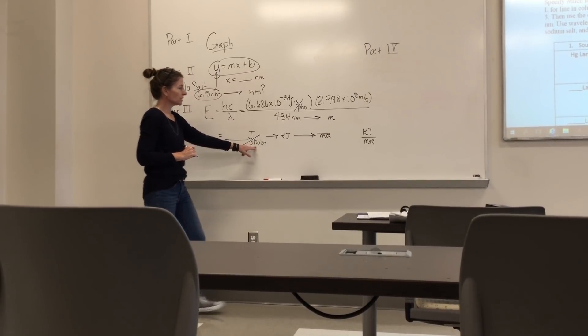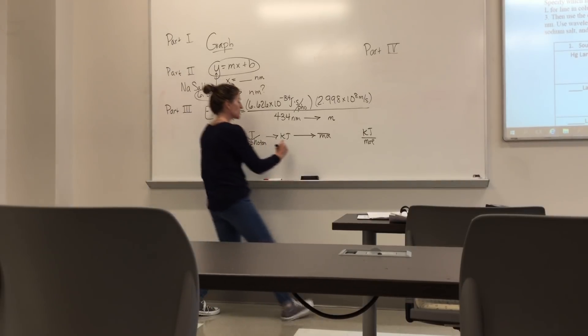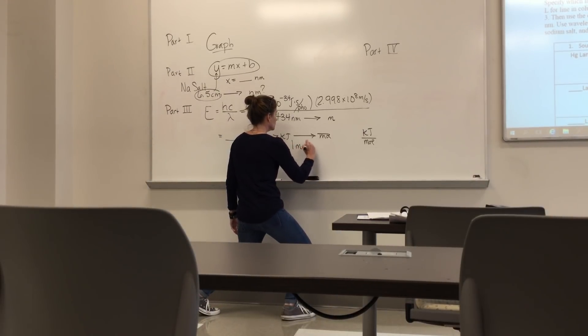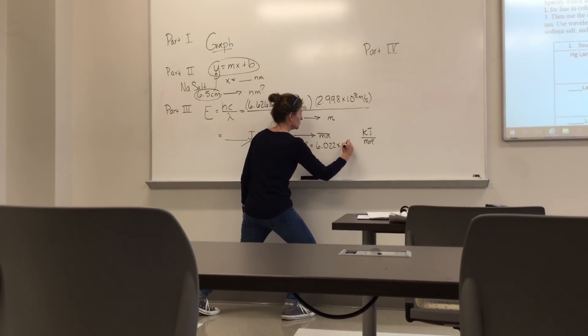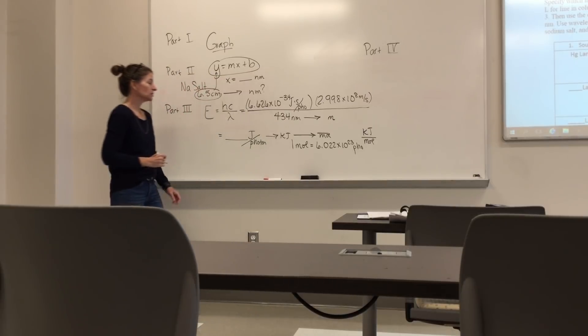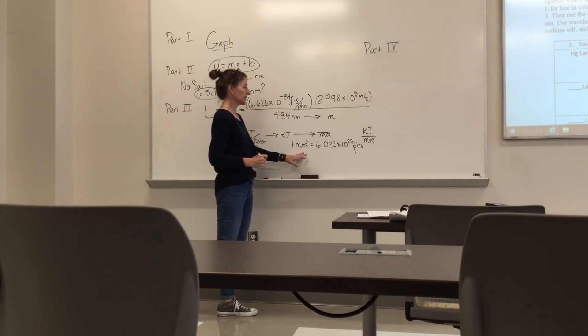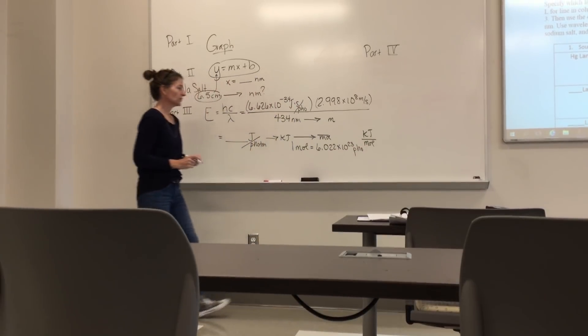Now, what this should trigger in terms of photons and moles is Avogadro's number. Because remember, for every one mole, there are 6.022 times 10 to the 23rd photons, for example. So you can use that conversion factor to get you to kilojoules per mole and get rid of your photons.